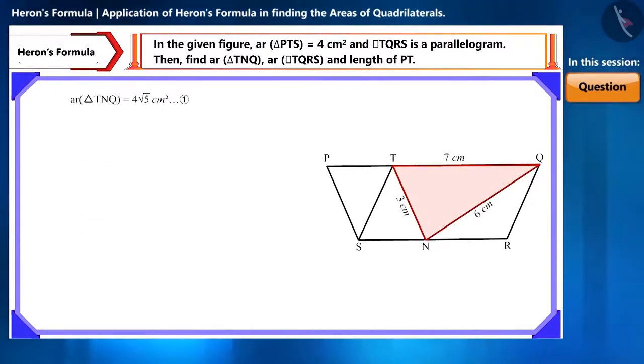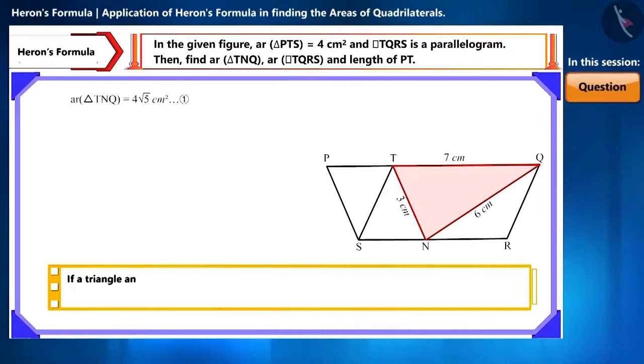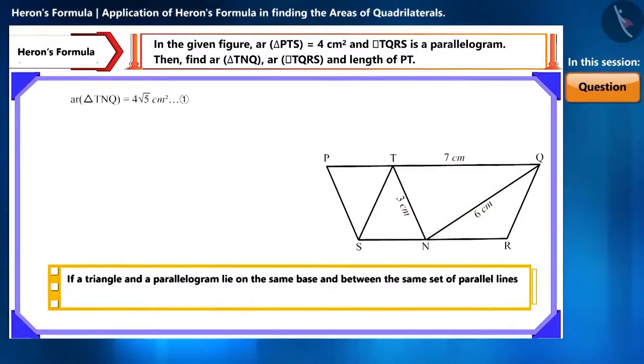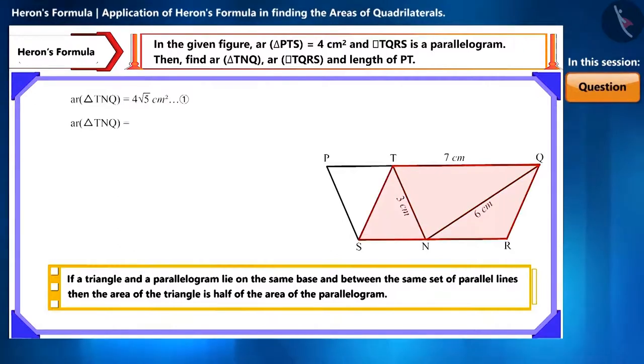Look at triangle TNQ and parallelogram TQRS carefully. Both of these are situated on the same base and between the same parallel lines. We know that if a triangle and a parallelogram lie on the same base and between the same set of parallel lines, then the area of the triangle is half the area of the parallelogram. So we can say that the area of triangle TNQ will be half of the area of the parallelogram.